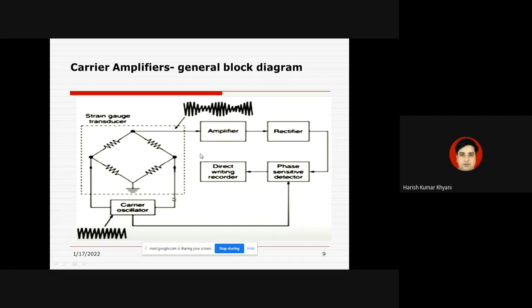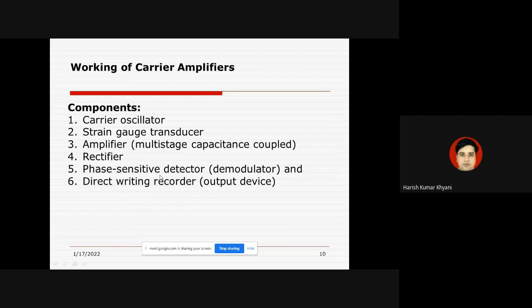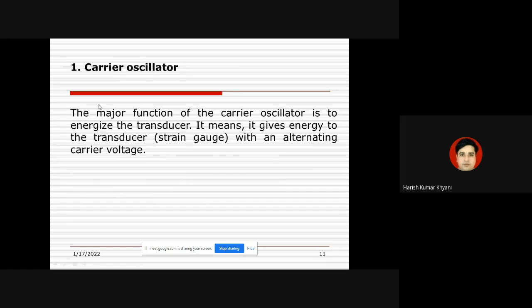There are six components in the general block diagram of a carrier amplifier: number one is the carrier oscillator; number two is the strain gauge transducer; number three is the amplifier, which is a special type — a multi-stage capacitance-coupled amplifier; number four is the rectifier; number five is the demodulator, that is the phase sensitive detector; and number six is the direct writing recorder, which is the output device.